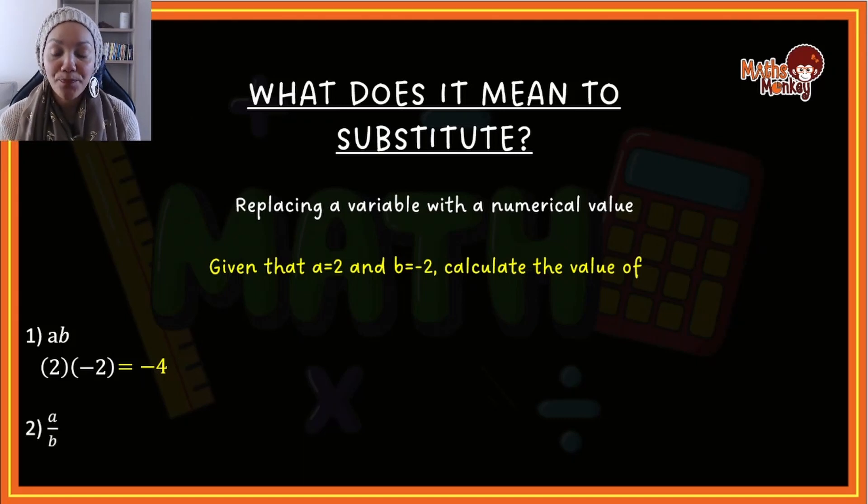Let's do another example. If I have a over b, that simply means I'm going to take a and make it 2, and b and make it negative 2. So now I say 2 divided by negative 2, which gives me negative 1. Why? Because a positive divided by a negative is a negative, and 2 divided by 2 gives me 1. So the expression a over b, if a equals 2 and b equals negative 2, the answer is negative 1.